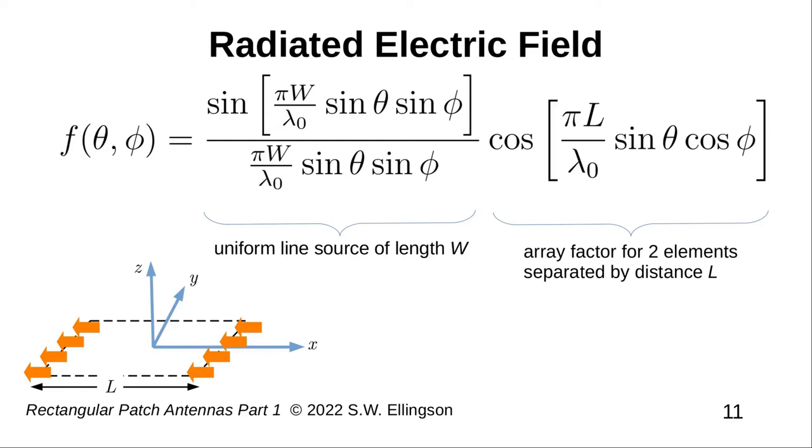The second factor is the array factor, and this accounts for the fact that we have not one of these line sources, but two. And those two line sources are separated by a distance, L. Worth noting here is that the first factor is actually very similar to cosine theta. That is, because the argument in the numerator and the denominator of this sinc-like function is generally pretty small, we are typically always in the central lobe of the sinc-type function, and that looks a lot like cosine. So, since both factors are approximately cosine theta, and I mean very approximately, you can infer correctly that the overall pattern will be similar to cosine theta, and we'll see that's true.